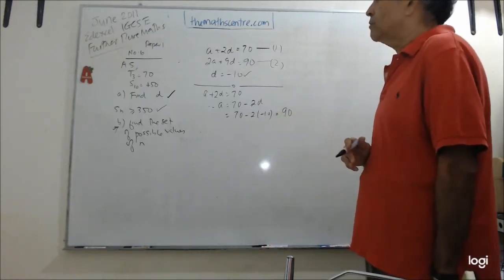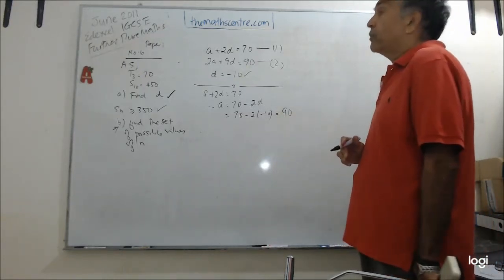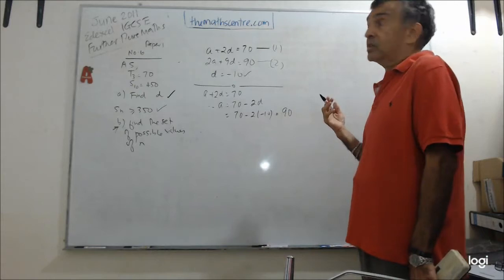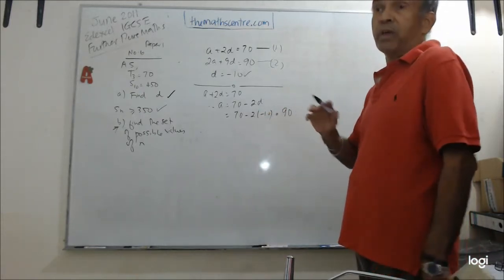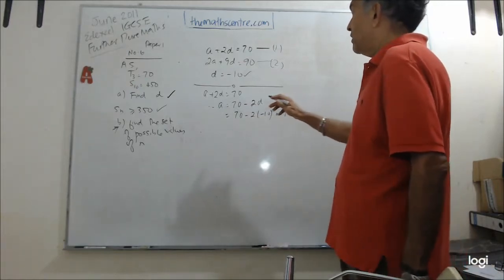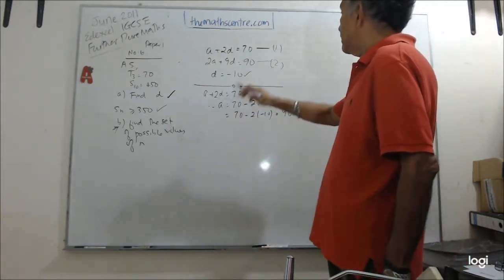So we've got the value of the first term. And if you hear some heavy breathing, it's my dog. He's just joined me, lying down in front here. So just bear with me, he breathes quite heavily. So let's come back. D is negative 10, A is 90.